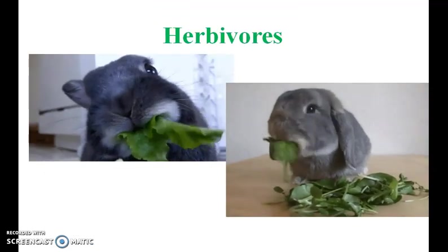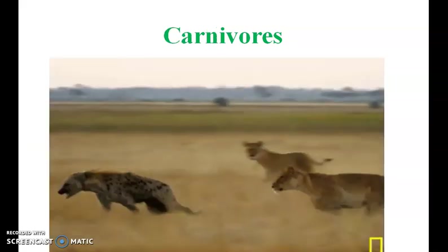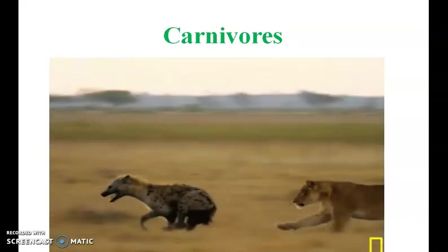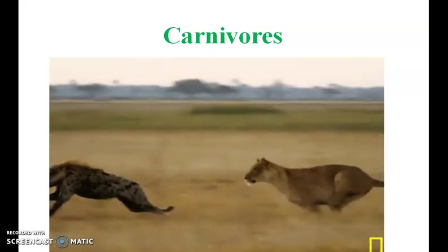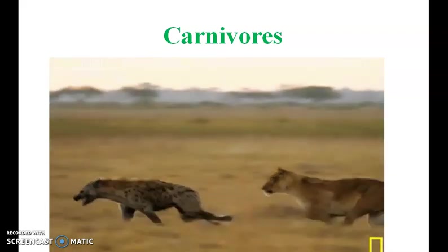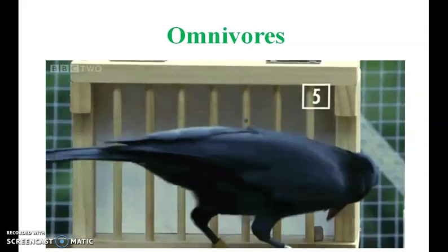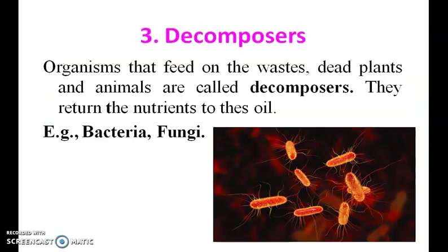These are herbivores animals. Lions are carnivores animals. Omnivores eat both plants and flesh. Organisms that feed on waste, dead plants and animals are called decomposers. They return the nutrients to the soil. Bacteria and fungi are examples of decomposers.